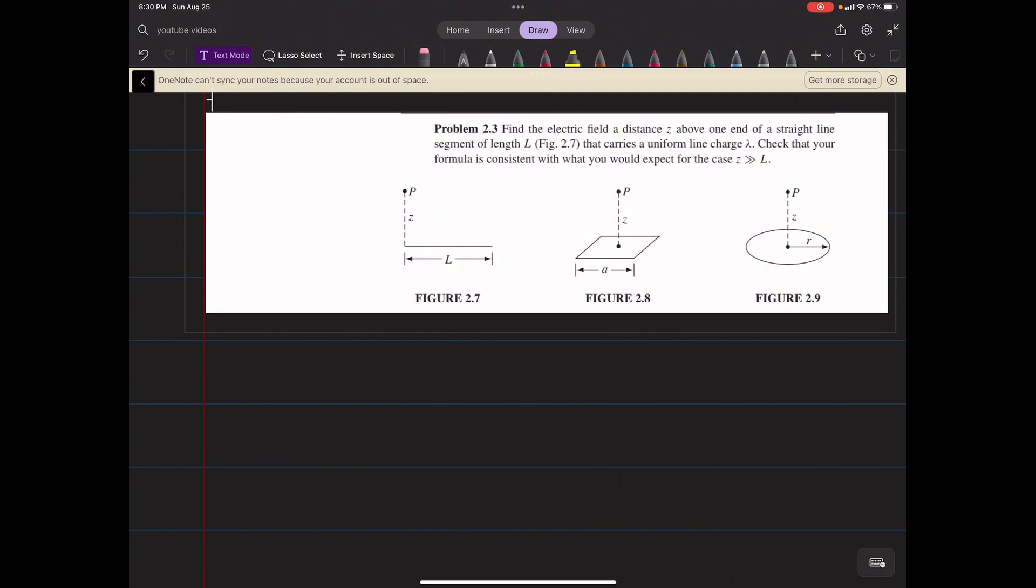To begin, I'll draw the geometry. The distance from any point on this line to the point P is going to be the square root of z squared plus x squared, where x is just where you are on that line.